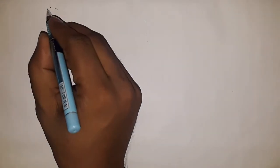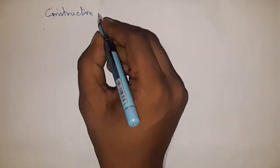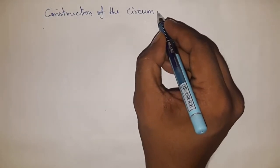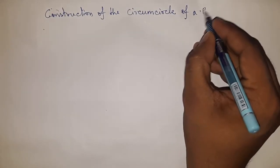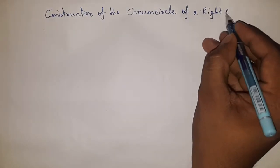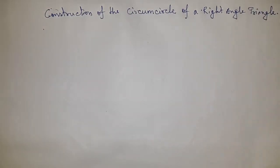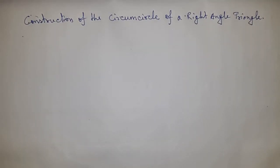Hi everyone, welcome to SSR classes. Today in this video, constructing the circumcircle of a right angle triangle by using pencil, compass and scale. So please watch the video till the end. Don't skip the video. So first of all we have to draw a right angle triangle then we can proceed.